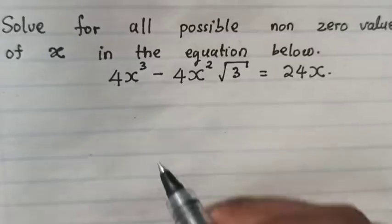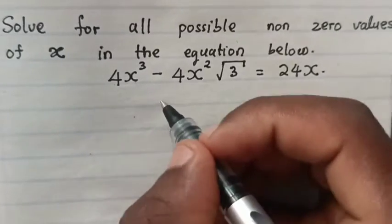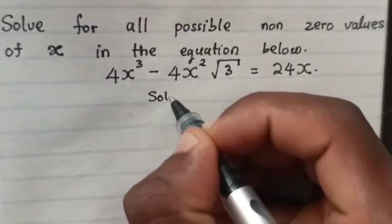Hello my friend, how can we solve for x in this exponential math problem? Let's see. Solve for all possible non-zero values of x in the equation below.